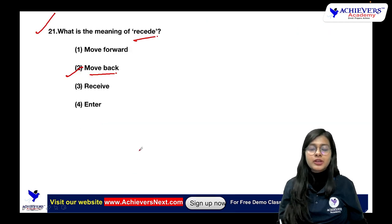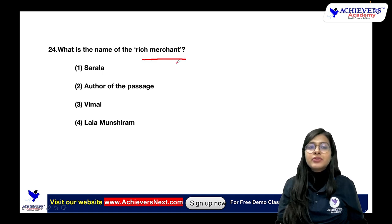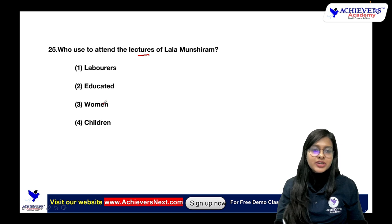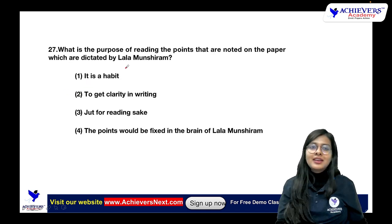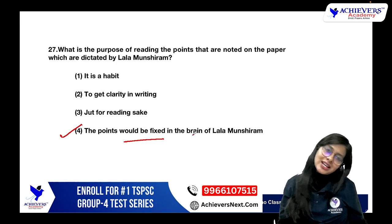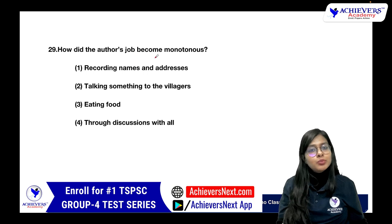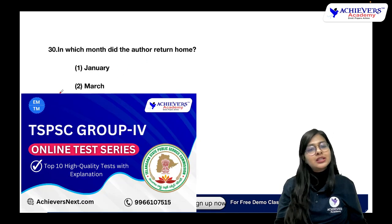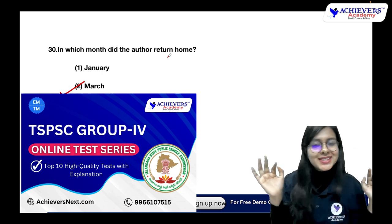The author returned home in March with a pocket full of money that vanished into the bottomless pit of household needs. His mother was proud, aunt Sarla became friendly, and grandmother thought he had performed a miracle. But little did they know that Lala Munshi Ram had lost the election, the author had lost his job, and his status reverted to what it was before. Answers: 'Receded' means move back. Rich merchant decided to be a politician. Handicap was illiteracy. Name was Lala Munshi Ram. Laborers attended the lectures. Author was astonished. Purpose was to fix points in Lala Munshi Ram's brain. Transport not used — auto. Job became monotonous by recording names and addresses. Returned home in March. Let's calculate your marks. In the next session we'll solve the para-jumbles. Bye-bye, take care!